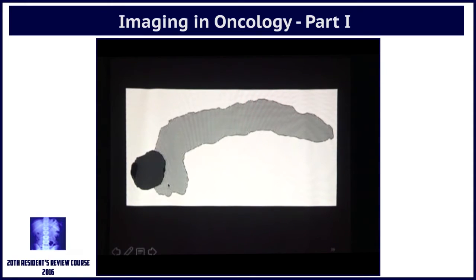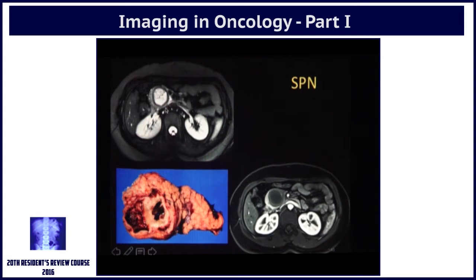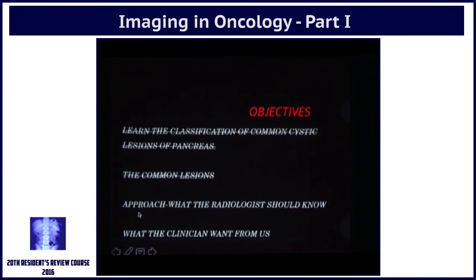They can occur in any location of the pancreas — head, body, or tail. This lesion is at the head of the pancreas in a 19-year-old female who came with pain in the abdomen. The lesion has both cystic and solid components. This is the same patient, and as you can see, there is dark-colored hemorrhage within.